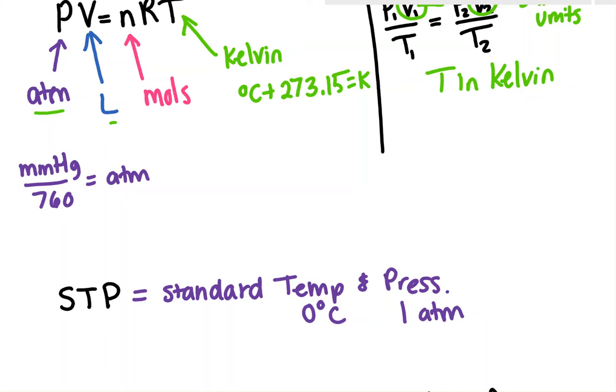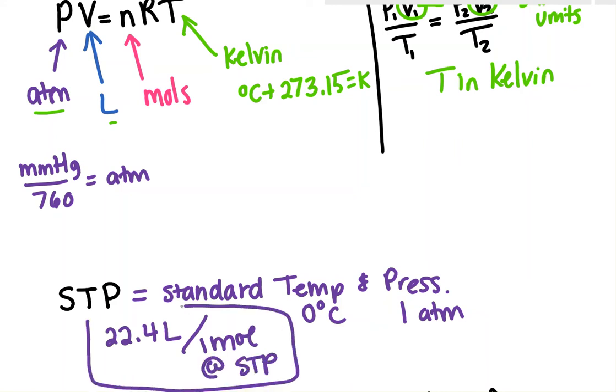The convenient thing about STP is that when you're comparing amounts of gas, you can just say at STP and then compare their volumes or whatever. Well, something that's useful is to know that there are 22.4 liters of a gas per one mole at STP. And that's a good thing to have memorized because there will be problems where you can just do it a little faster by knowing that conversion factor for sure.